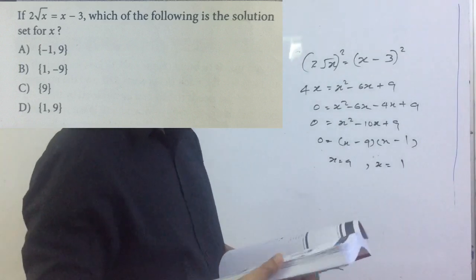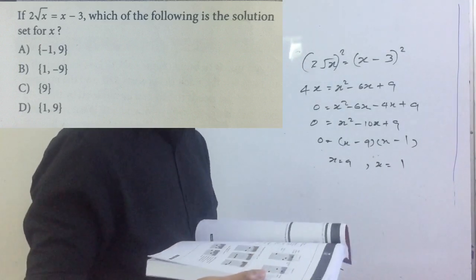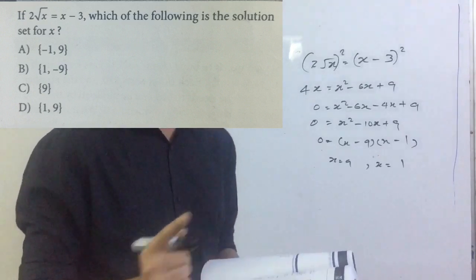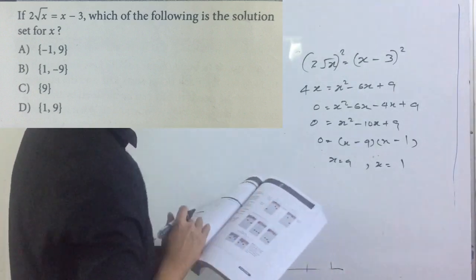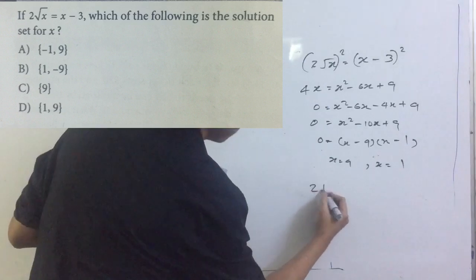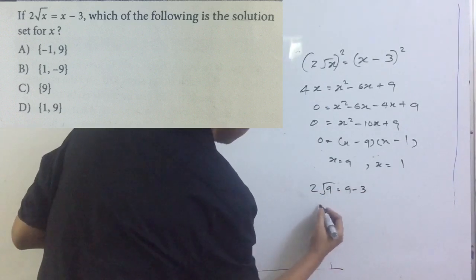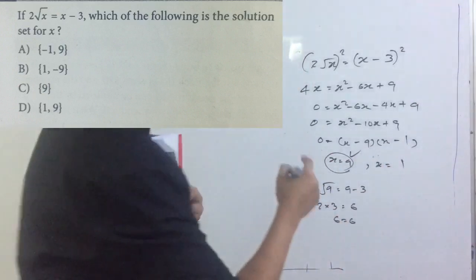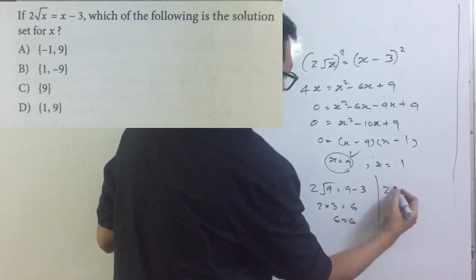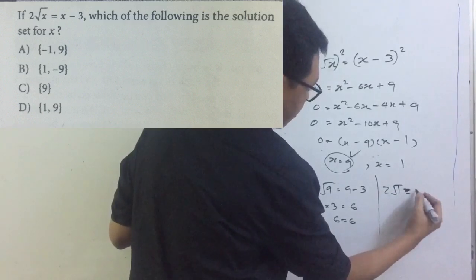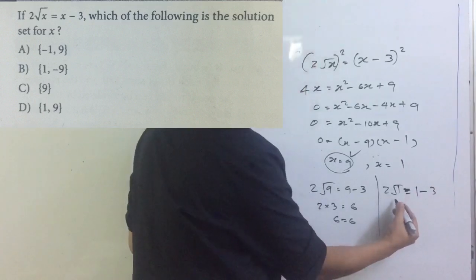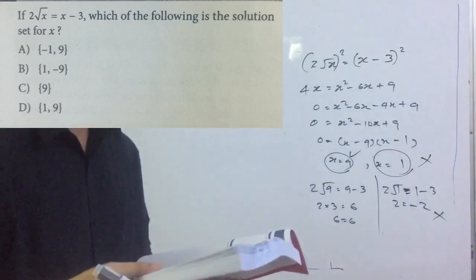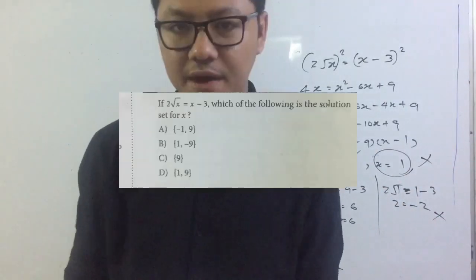The common mistake students make is they look at the choices and see both options and choose them — but that is wrong. You have to check for the extraneous solution always, for square root equations. Let me check: 2 times the square root of 9 equals 9 minus 3, which is 2 times 3 equals 6 — 6 equals 6, correct solution. Now let's check x equals 1: 2 times the square root of 1 equals 1 minus 3 — that gives 2 equals negative 2, which is wrong. So the correct answer is x equals 9 only.